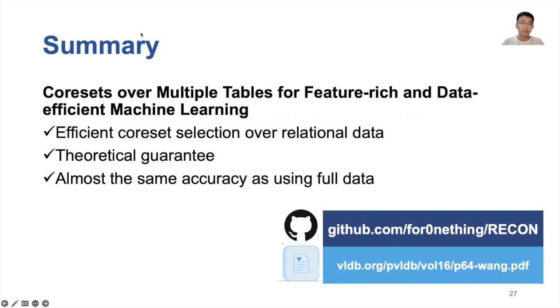Finally, to summarize, in this paper, we propose RECAN, an algorithm that can efficiently select coreset over relational data. We have made the code available on GitHub. If you have any questions, feel free to ask. Thank you.